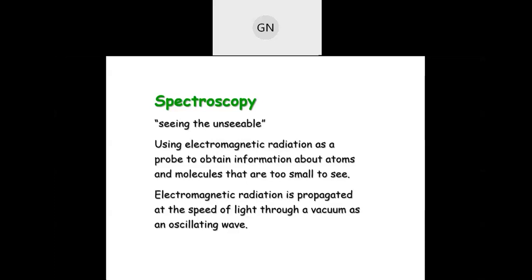Spectroscopy is the interaction of electromagnetic radiation with matter. Electromagnetic radiation is composed of an electrical component and a magnetic component, both being perpendicular to each other. The propagation of the wave is also perpendicular to the electric and magnetic fields — so all three components are mutually perpendicular to each other.